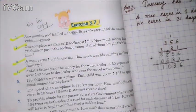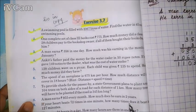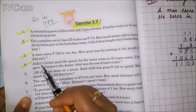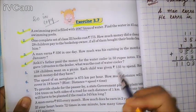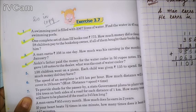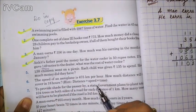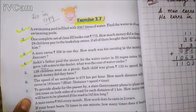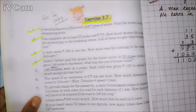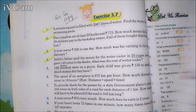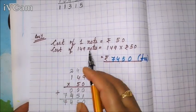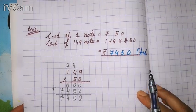Question number 4: Ankit's father paid money for a water cooler in 50-rupee notes. He gave 149 notes to the dealer. What was the cost of the water cooler? All notes are of 50 rupees only. He gave 149 notes. The cost of one note is 50 rupees. We have to find the cost of 149 notes.